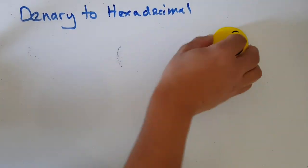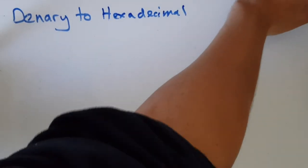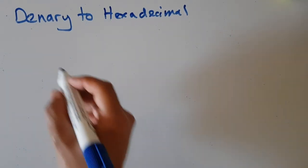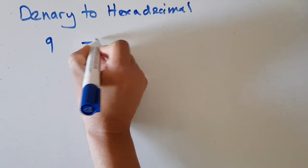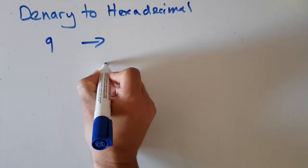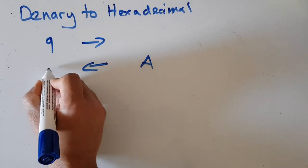I always just remember that 10 is A, and after that everything becomes quite easy. What is denary nine converted to hexadecimal? What is hexadecimal A converted to denary?